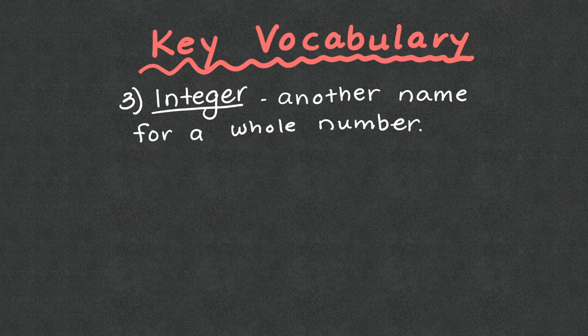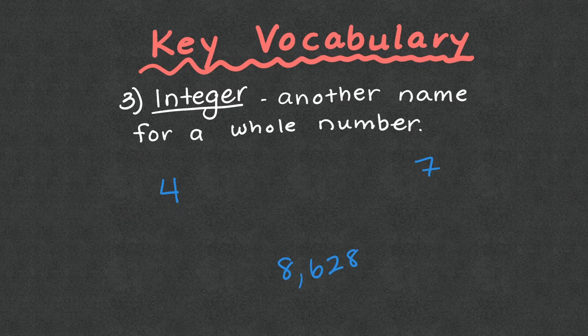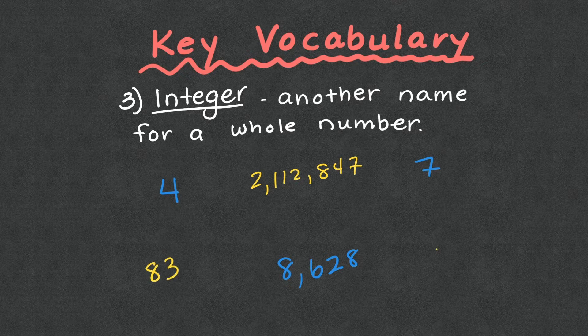You may hear the word integer, and that's just going to be another name for a whole number. Whole numbers are going to be numbers that have no decimal pieces. So four, seven, 8,628, 2,112,847, 83, 1 — all of these are integers because they are whole numbers that have no decimal pieces.